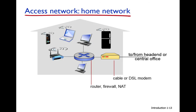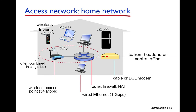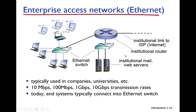A wireless access point connects wireless nodes and wired Ethernet connects wired devices. The router, which may include firewall and NAT functionality, is connected through a DSL modem to the rest of the internet. Nowadays, the wireless access point and router are often combined in a single device. The home can connect to the internet via DSL, cable, or FTTH.